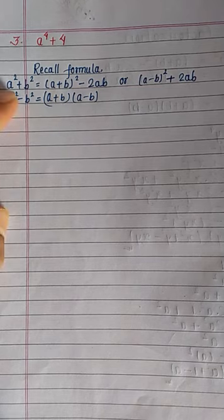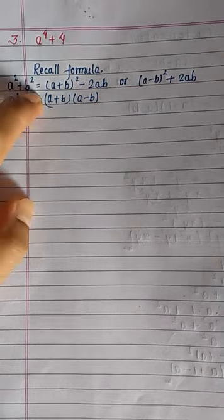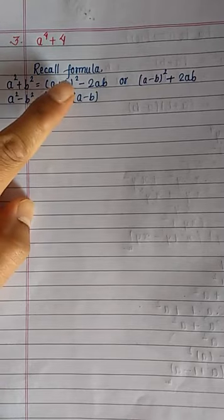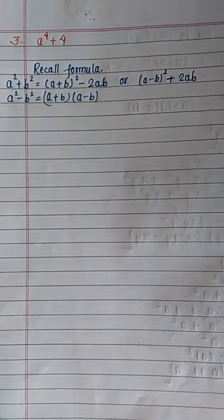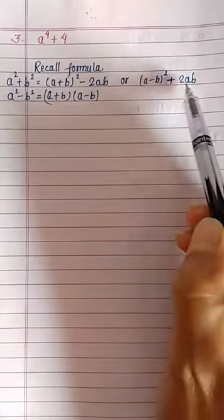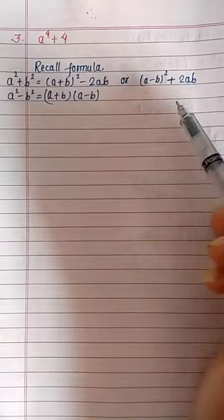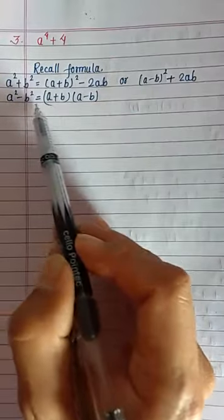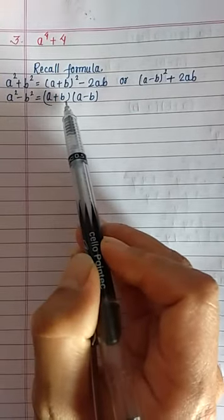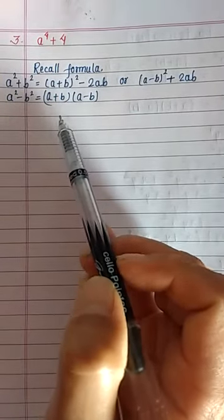Let's recall the formula: a square plus b square is equal to a plus b whole square minus 2ab, or a minus b whole square plus 2ab. Also, a square minus b square equals a plus b times a minus b.